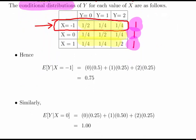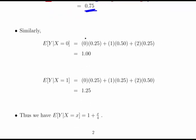The expected value of Y given X equal to minus 1 is computed by multiplying the three values of Y by their corresponding conditional probabilities and summing: we get 0.75. For X equal to 0, the conditional probabilities of Y are 0.25, 0.5, and 0.25, giving an expected value of 1. For X equal to 1, the expected value of Y given X equals 1 is 1.25.